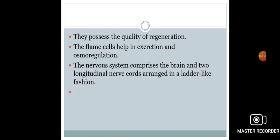Flame cells are present in platyhelminthes which are useful in excretion and osmoregulation. The nervous system consists of brain and two longitudinal nerve cords arranged in a ladder-like fashion.